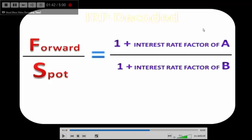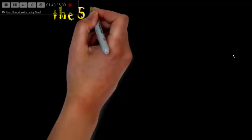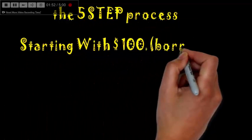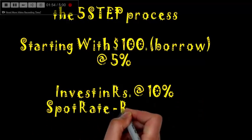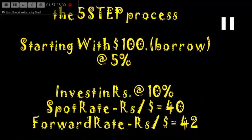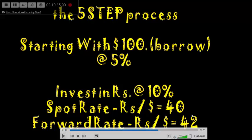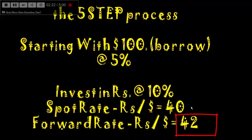In the equation, A is the price currency — rupee in our example — and P is the base currency, which is the dollar. Starting with $100, we borrow at 5% and invest in rupees at 10%. The spot rate today is 40 and the forward rate is 42. Since the dollar's forward rate is higher than the spot rate, the dollar is at a premium.